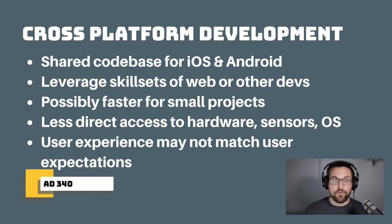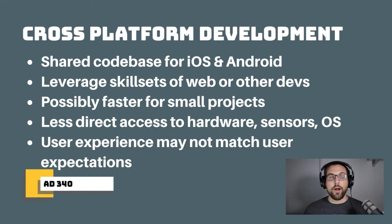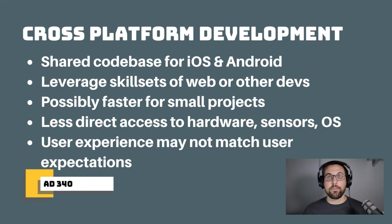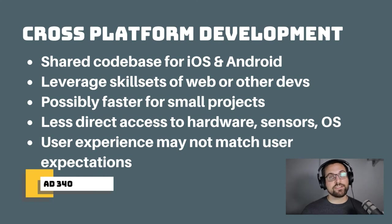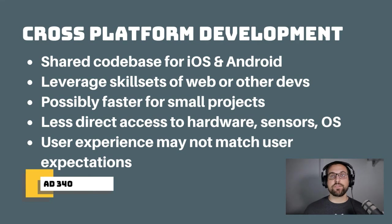Next up is cross-platform development. Cross-platform development aims to write a single code base — really a single app — that can be used on both iOS and Android. This is a great way to leverage skills of web developers, particularly for something like React Native, because they can learn a single language and build apps for both platforms. This has the potential to be a lot faster for certain types of projects, and for small one-off projects, cross-platform can be a really great option.